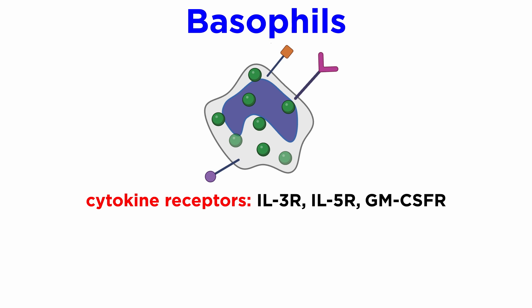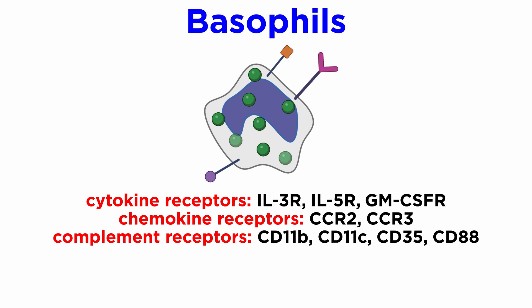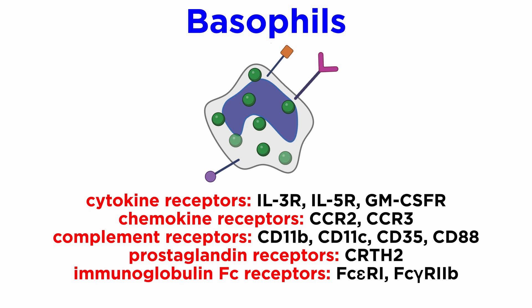Basophils express a variety of cytokine receptors such as IL-3R, IL-5R, and GM-CSFR; chemokine receptors like CCR2 and CCR3; complement receptors CD11B, CD11C, CD35, and CD88; prostaglandin receptors like CRTH2; immunoglobulin Fc receptors FcεR1 and FcγR2B; and TLRs.